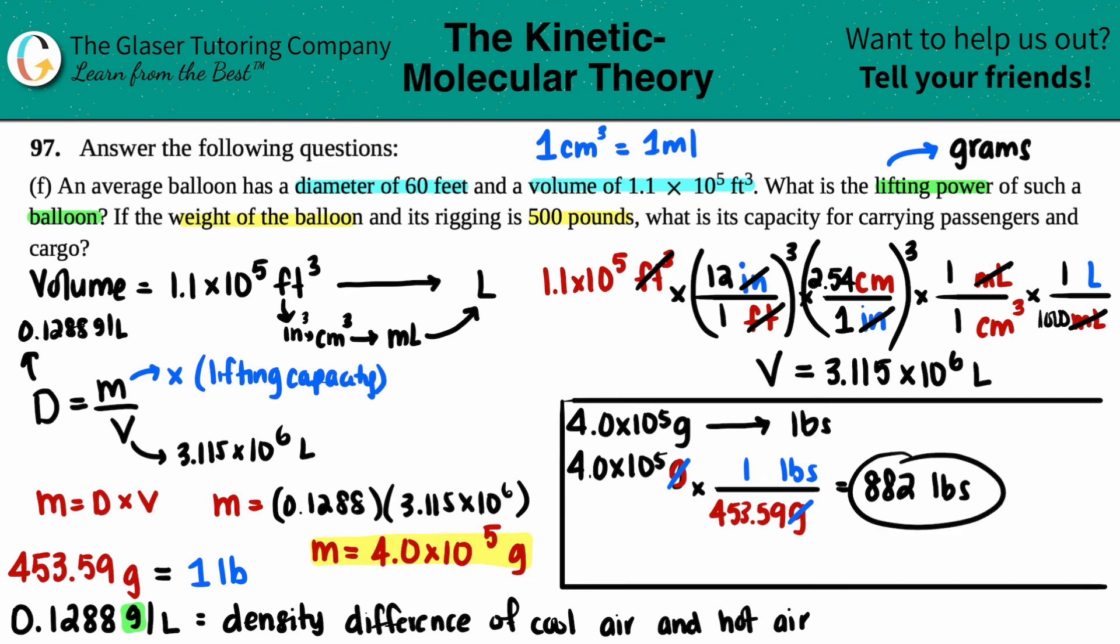The balloon weighs 500 pounds. We can't exceed 882 pounds total lifting power. If the balloon takes 500 pounds, what's the capacity for passengers and cargo? Simply: 882 minus 500 equals 382 pounds. So 382 pounds total for all passengers, luggage, and cargo allowed on this balloon ride.